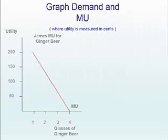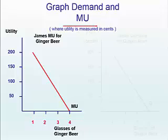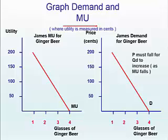If we graph an example — James's marginal utility for ginger beer, measured in cents — you'll see that you can put a demand curve together that's exactly the same as the MU curve. As consumption of ginger beer goes up, both the price a person is prepared to pay and the extra utility they gain from the product decreases.